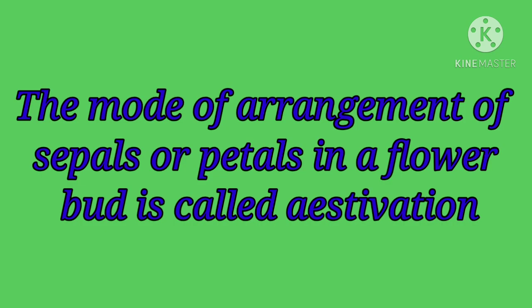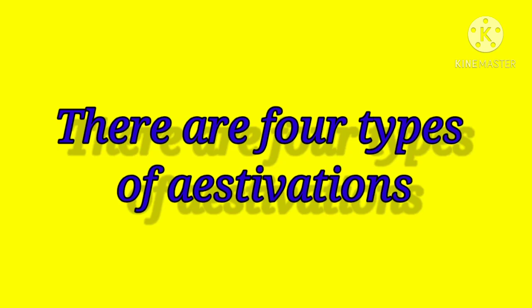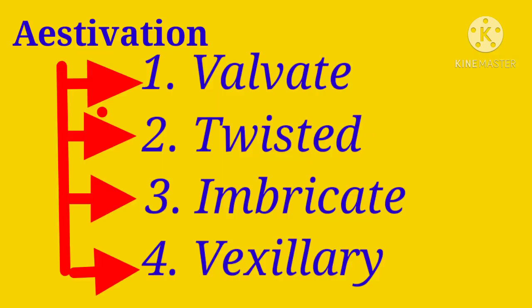The mode of arrangement of sepals or petals in a flower bud is called Estivation. In a flower bud, petals and sepals are arranged in an estivation. There are four estivations: Valvate Estivation, Twisted Estivation, Imbricate Estivation, and Vexillary Estivation.